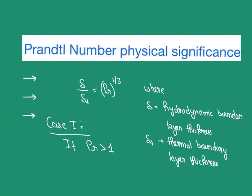There are three cases. Case 1: Pr > 1. If the Prandtl number is greater than one, then momentum diffusivity is greater than thermal diffusivity, meaning the hydrodynamic boundary layer is thicker than the thermal boundary layer. The fluid can transport momentum faster than heat by conduction — in other words, convection dominates over conduction.